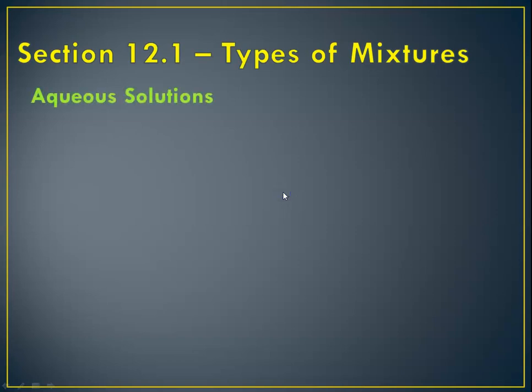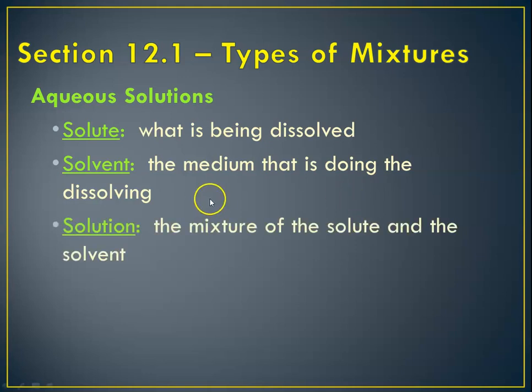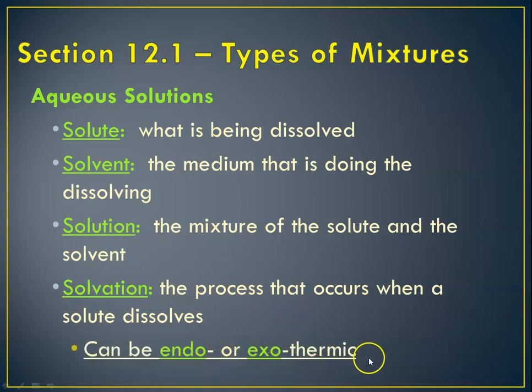So in talking about our types of mixtures for this chapter, we're concerned with aqueous solutions, which are water-based. Let's get some definitions out of the way. Solute is the thing that's being dissolved. The solvent is the thing that does the dissolving, the so-called dissolving medium. The solution is this mixture of solute with solvent. And the solvation process is the process that occurs when something is being dissolved. These processes can be endo- or exothermic.